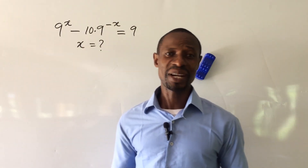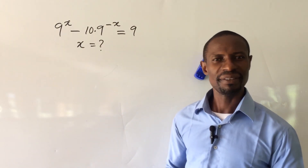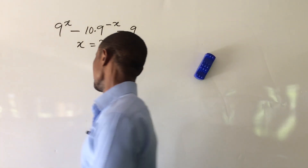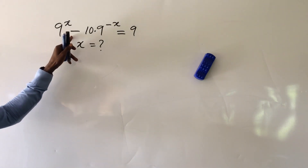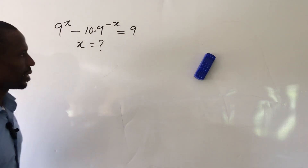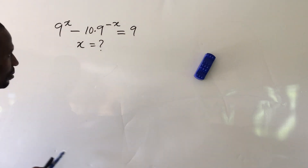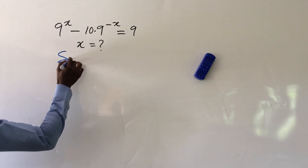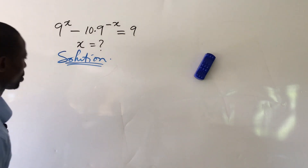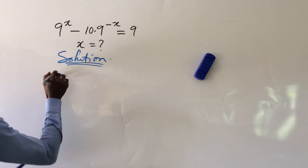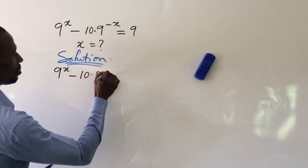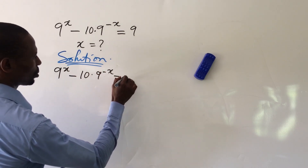Welcome everyone to class today. We have a very nice exponential question. The question is: 9 to the power of x minus 10 times 9 to the power of minus x, equal to 9. What would be the value of x? Let's take our solution.